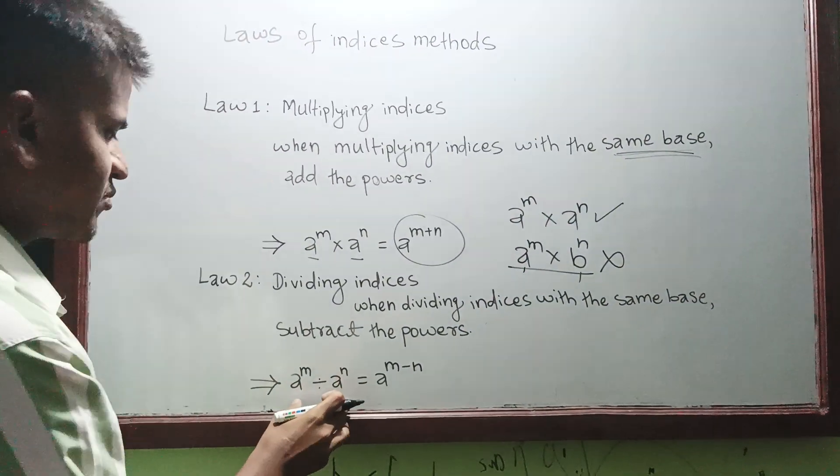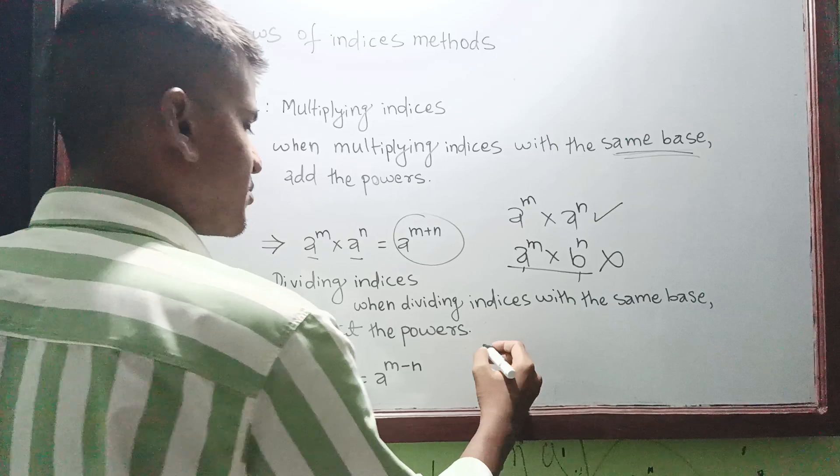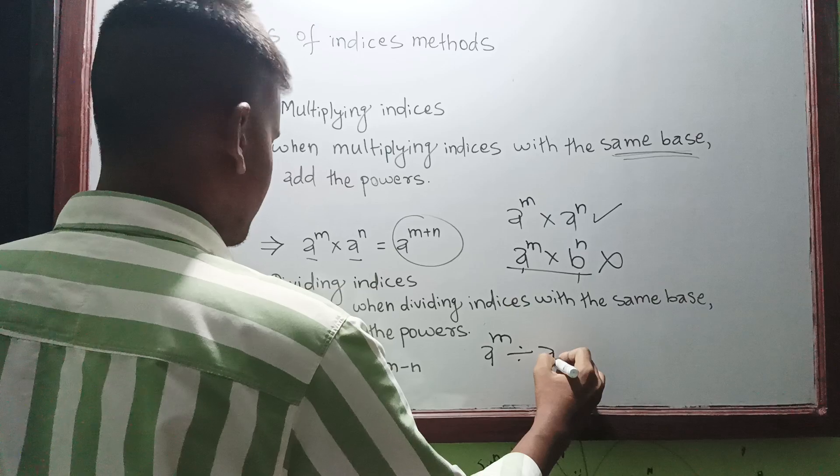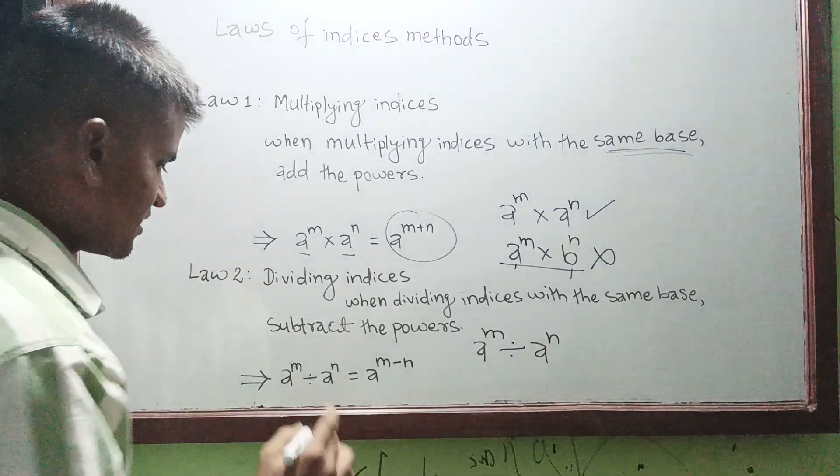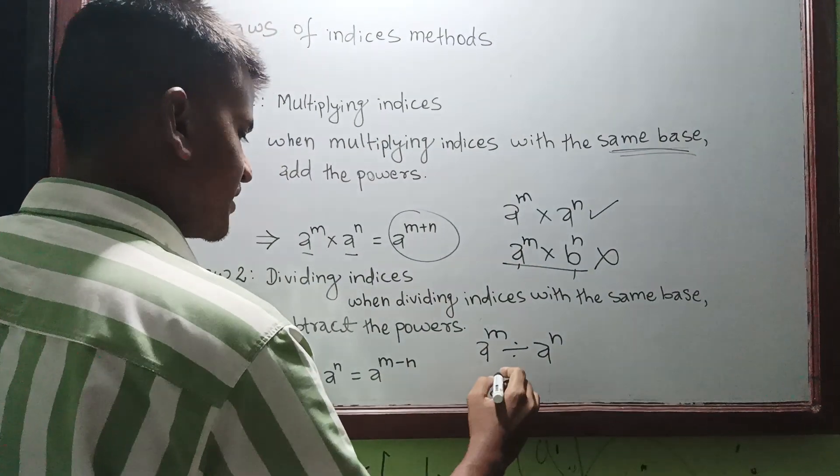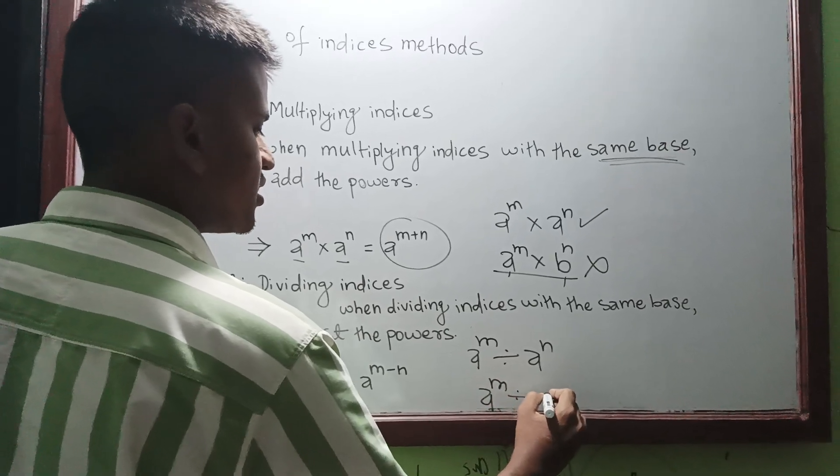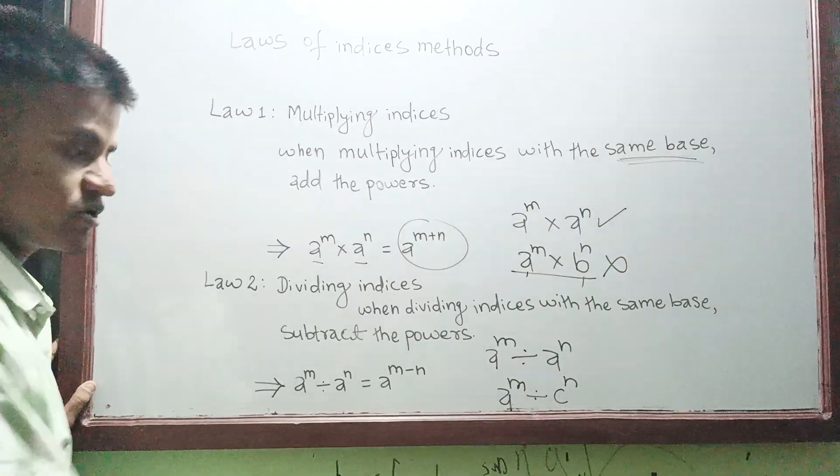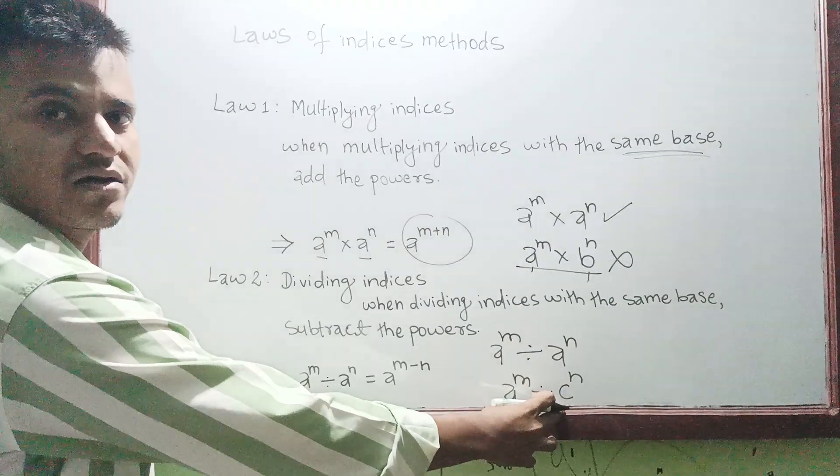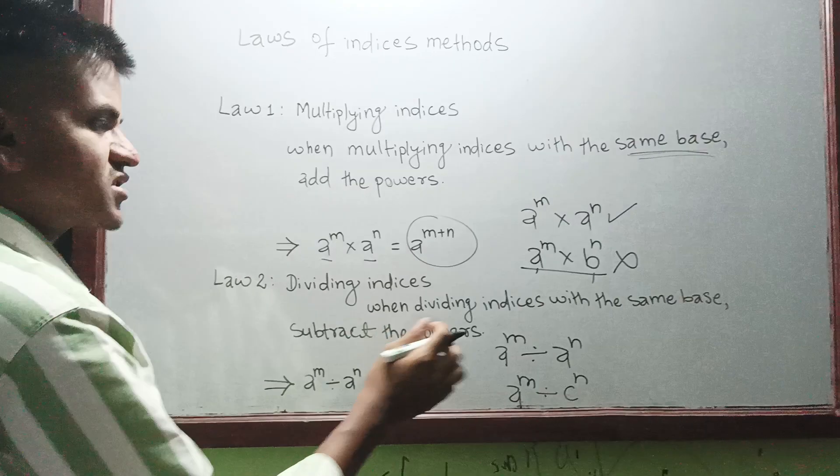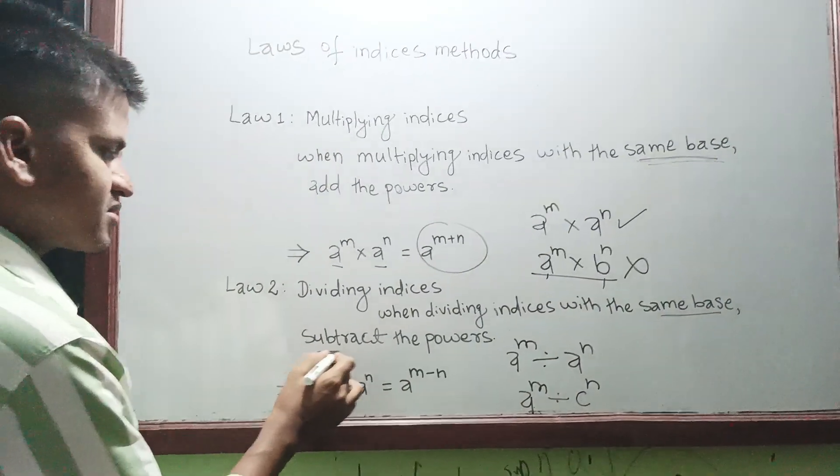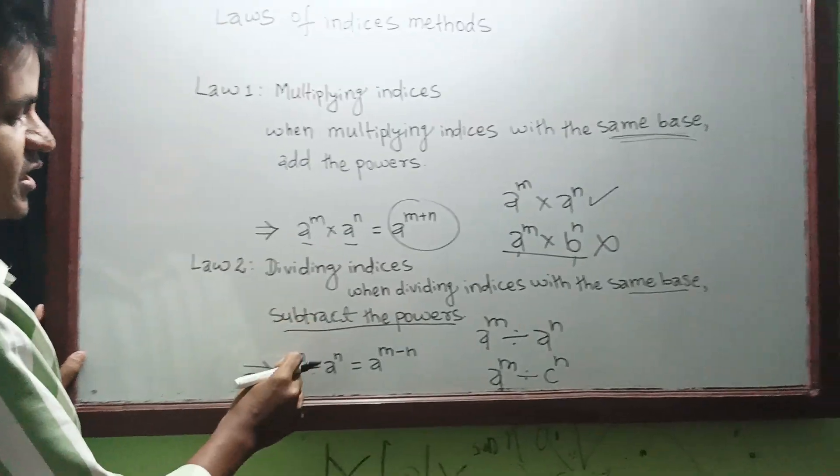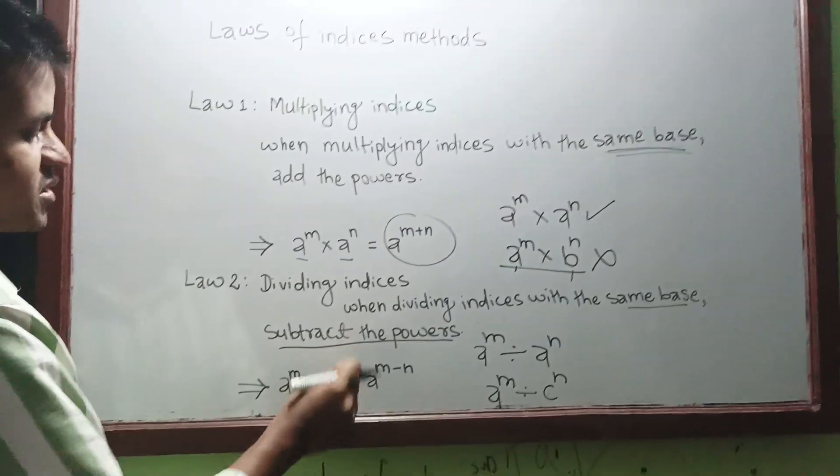The same is true for here also. The same example I will show you again. So a to the power m divided by c to the power m - now 'a' and 'c' have different bases, so it can't be subtracted here. The first condition is the same base, and the second is subtract the power. So a to the power m divided by a to the power n will be a to the power m minus n. Always subtracting.